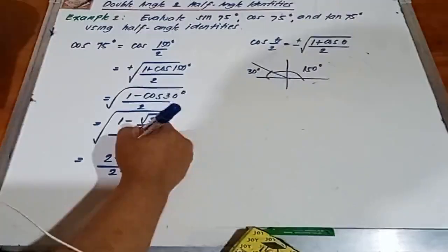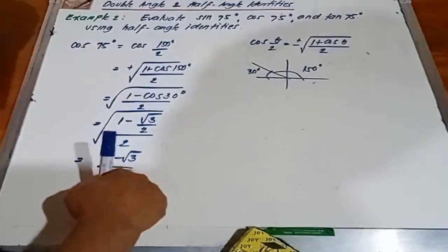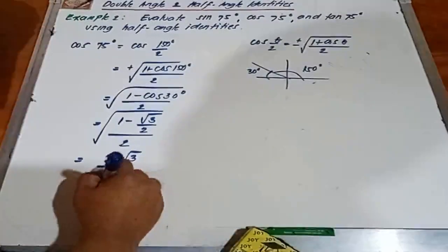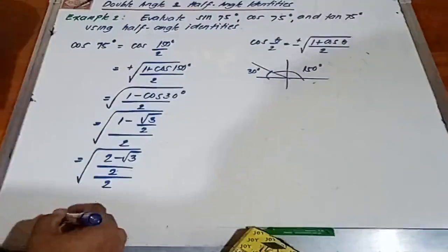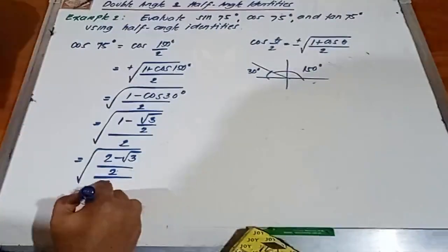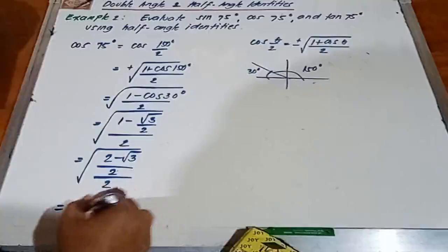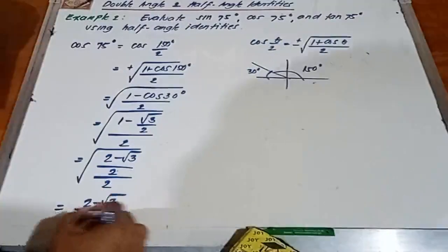Pinagsama ko na, napupunta na ito sa ilalim. Pinagin natin yung shortcut. Next, we have 2 minus square root of 3 over 4.